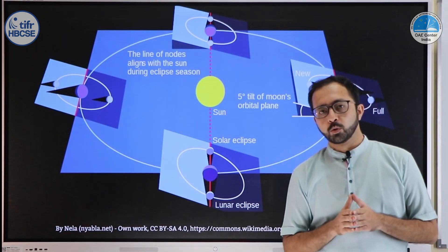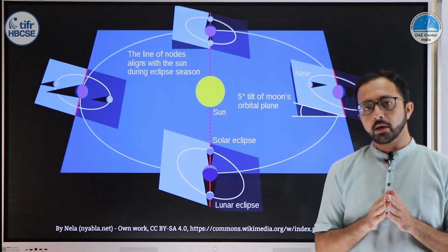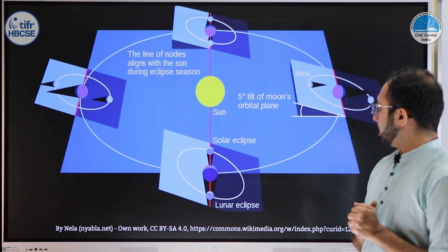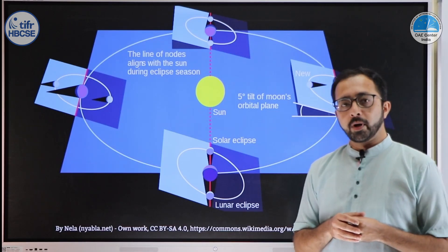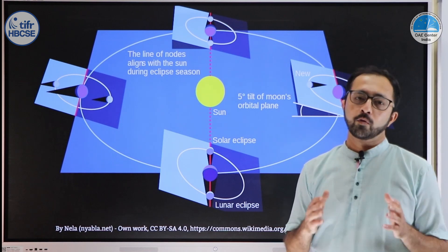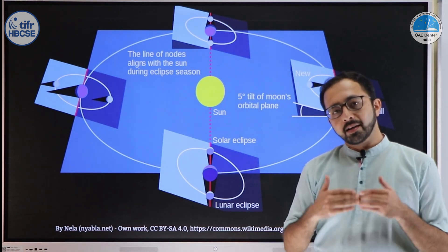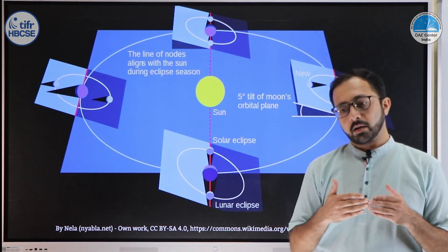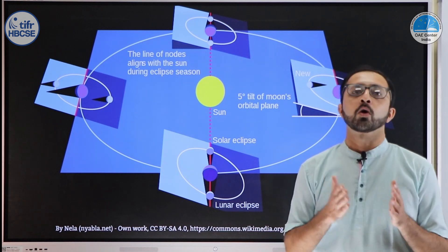An obvious question is: why doesn't a lunar eclipse occur on every full moon day, or a solar eclipse on every new moon day? The reason is that the plane of the earth around the sun — called the ecliptic — and the plane of the moon's orbit around earth are tilted with respect to each other at an angle of around five degrees. The moon is sometimes above the ecliptic and sometimes below it. Unless all three bodies — the sun, moon, and earth — are aligned at a node, you don't see an eclipse.